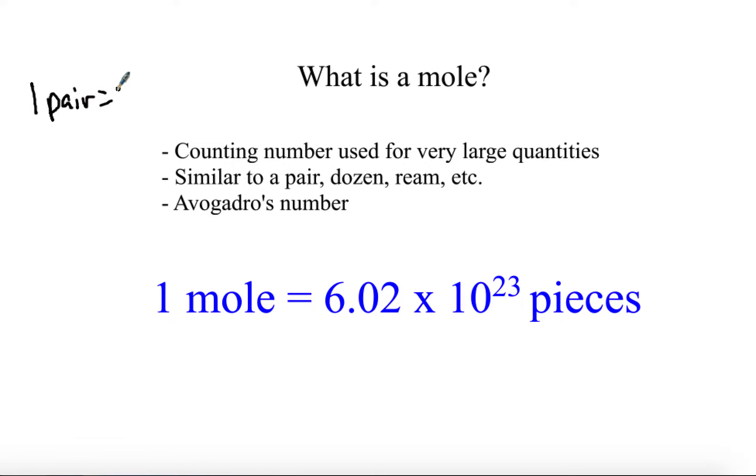One mole represents 6.02 × 10^23. This number is known as Avogadro's number, and the mole is really just the chemistry version of what a pair or dozen would be. It's not that much different, but it's unfamiliar because we're dealing with a massive number that we're not used to in everyday life.